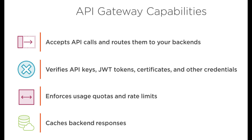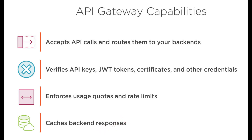Now let's look at the API gateway capabilities. It accepts API calls and routes them to the backend. It can also verify API keys and reject requests. It can verify JWT tokens at the front end of the API management itself — you don't need your APIs to verify the JWT token; the API gateway can handle that. It can verify certificates and other credentials. You can also enforce usage quotas and rate limits — how many requests per second are allowed, or what the total consumption plan is for a given customer. If requests go beyond the limit, it can stop them.